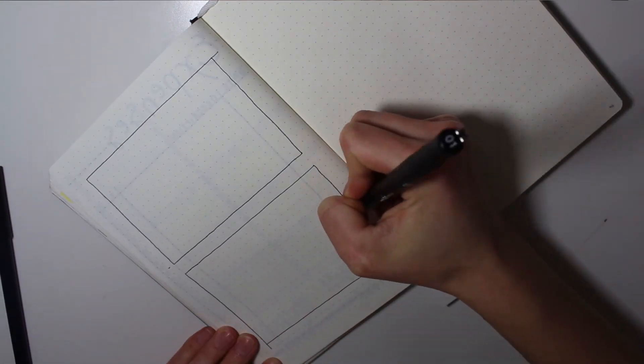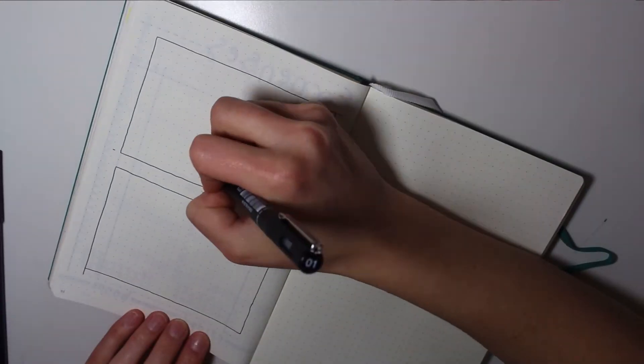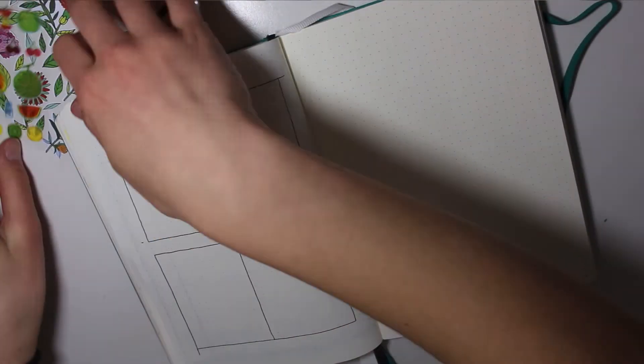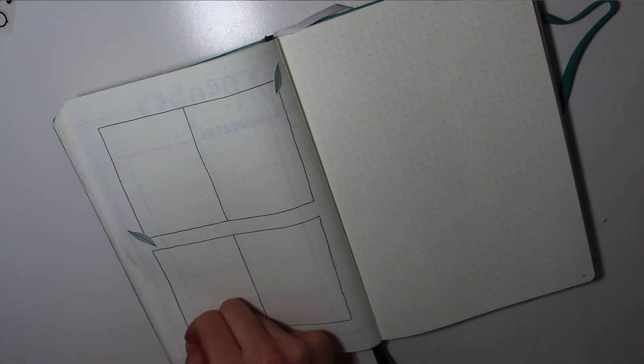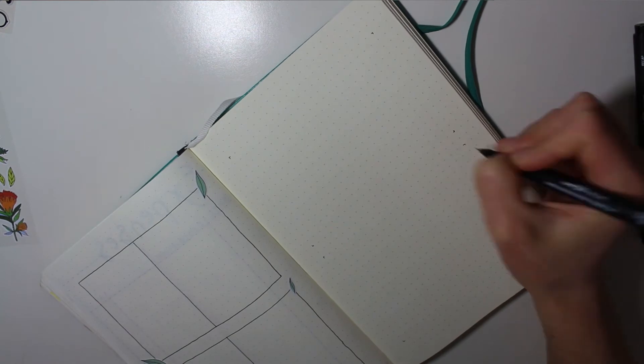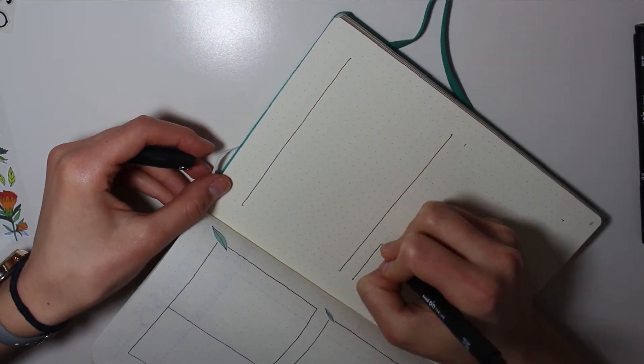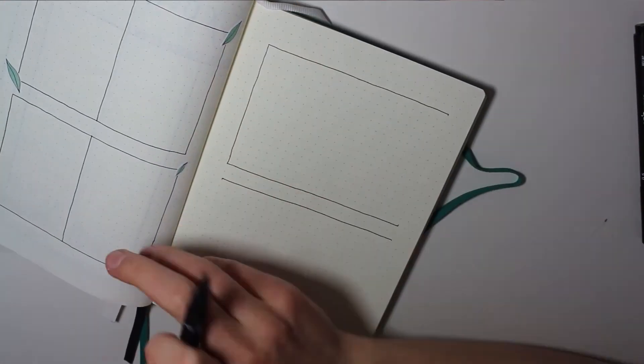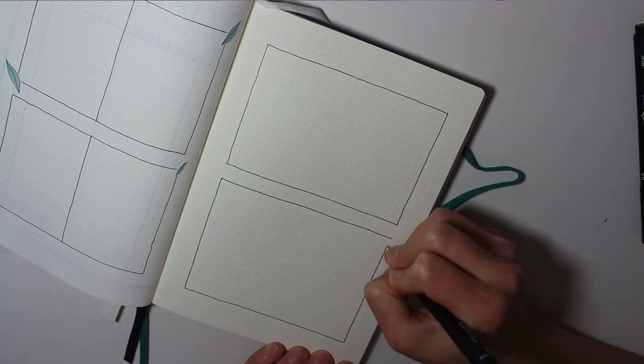And then moving on to the last page of this one, I'm just creating these boxes which take up most of the page and I did make some mistakes so I decided to just use some of these stickers. Then I just used the stickers to cover up the mistakes. I think it ended up looking really nice.